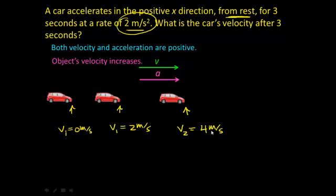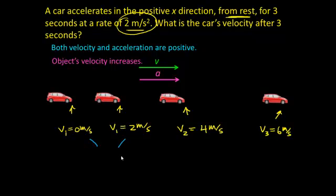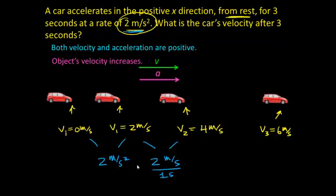After one more second, the velocity goes from 4 meters per second to v3 — the velocity after 3 seconds of accelerating — of 6 meters per second. During each one-second interval, the velocity increases by 2 meters per second. That's what it really means for an object to accelerate at 2 meters per second per second. These two ways of expressing acceleration are equivalent.